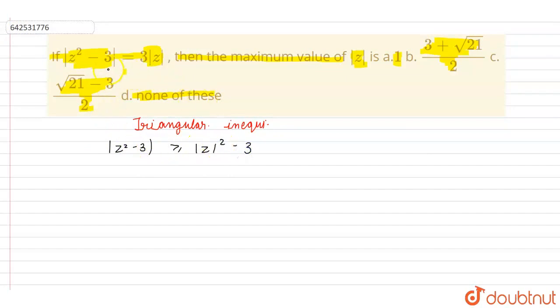Now, we know that this value is equal to 3 into mod z. So, this equation becomes 3 into mod z greater than or equal to mod z squared minus 3.